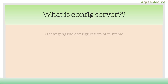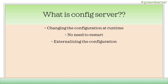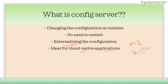So we understood why we need config server and what is its importance. What is config server? It is used for changing the configuration at runtime, and for that we do not need to restart or redeploy our application. We are externalizing the configuration — externalizing means changing the property configuration from outside without changing the code itself and without redeploying or restarting the system. So it is ideal for cloud-native applications. Cloud environment gives you the facility to create microservices applications on the fly, and that is the benefit of cloud-native applications.